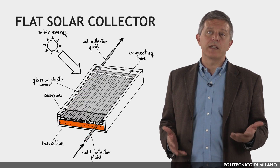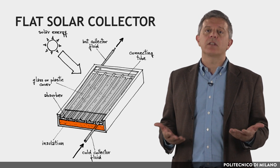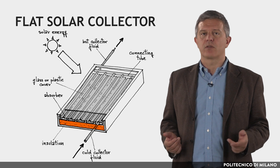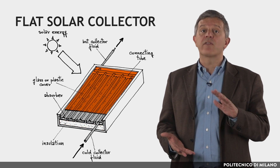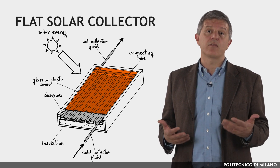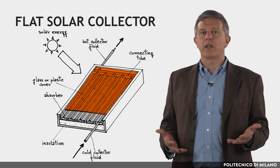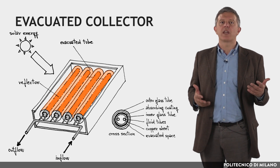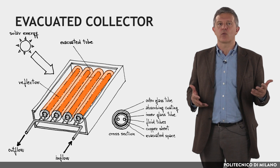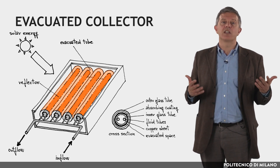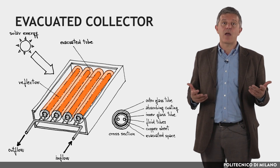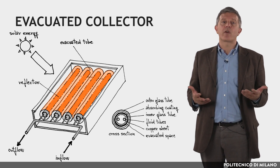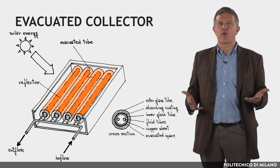The absorber plate is placed into a box insulated at the back and along the sides, treated and coated to absorb the maximum amount of incident solar radiation and to minimize far infrared re-emission. A transparent cover, located in front of the plate, reduces convective losses and mainly the radiative ones in the far infrared, thanks to the greenhouse effect. The evacuated collector consists of a series of evacuated glass tubes, each containing an absorber and pipes through which a heat transfer fluid flows. The vacuum reduces convection heat loss between the absorber and the glass, increasing efficiency and allowing high temperatures to be achieved. Some models are also provided with a rear reflector foil, appropriately shaped, to increase the amount of solar radiation on the absorbing plate.